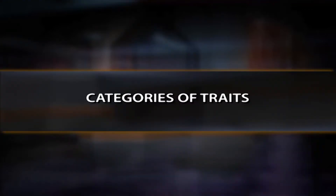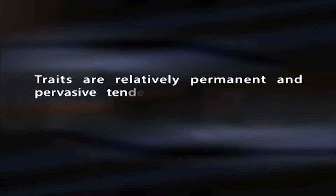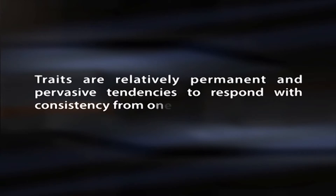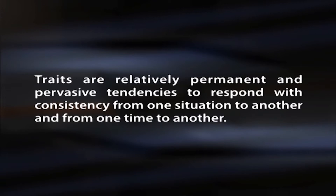According to Cattell, behavior is determined by the interaction of traits and situational variables, but his major organizing concept resides in his description of various kinds of traits. Traits are relatively permanent and pervasive tendencies to respond with consistency from one situation to another and from one time to another. They are hypothetical mental structures inferred from behavior, which predispose the person to behave uniformly across various circumstances and across time. Traits reflect stable and predictable characteristics and are the most important of Cattell's concepts.